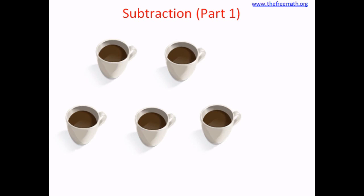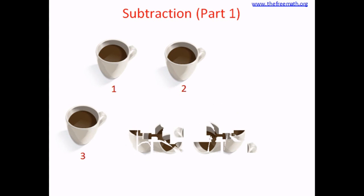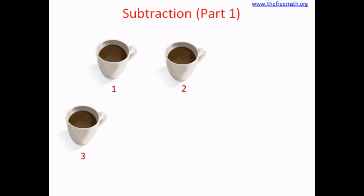Let's see one more example. Now we have five cups — how many? One, two, three, four, five. We have five cups. Out of these five cups, two cups are broken and gone. So how many cups are left? One, two, three.